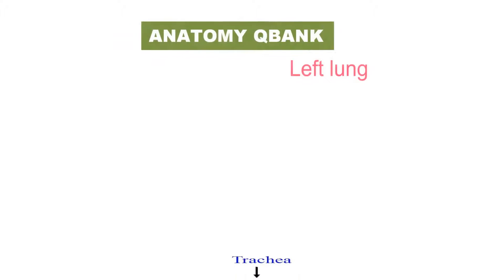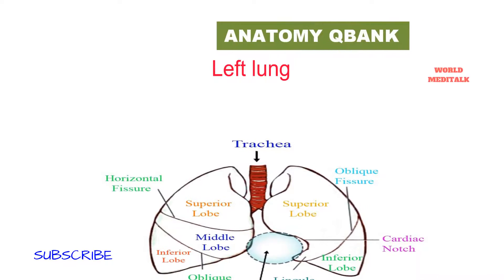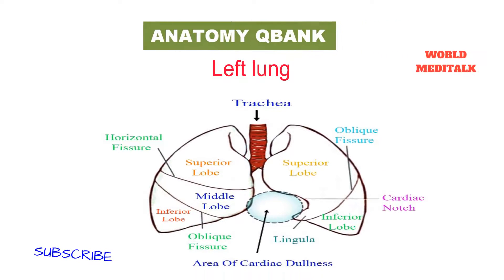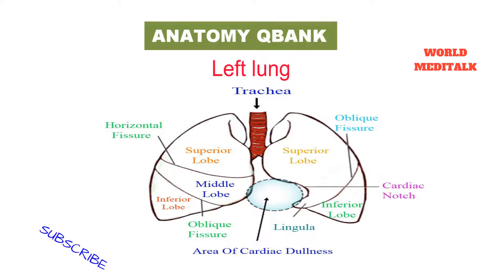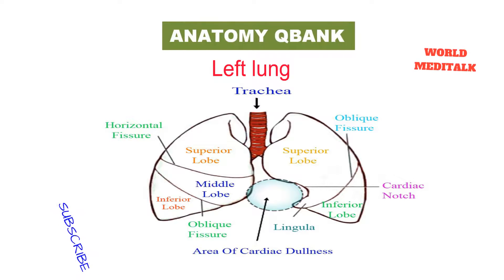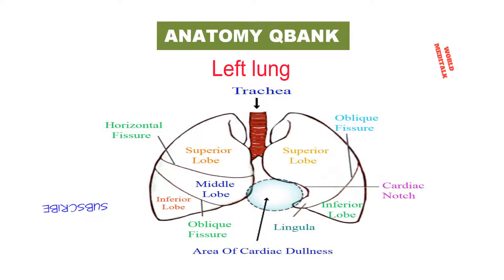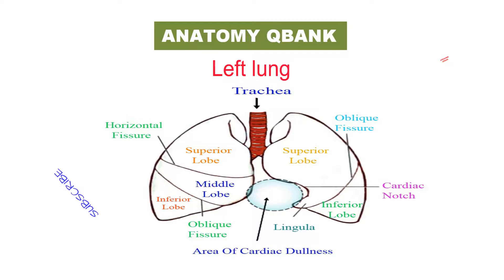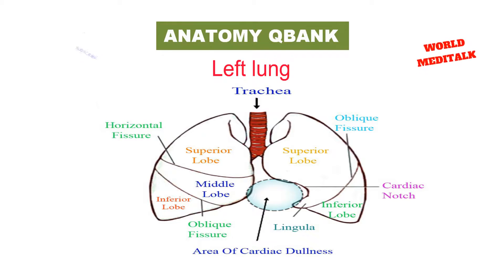In the left lung, above the hilum there is a furrow produced by the aortic arch, and then superiorly the groove accommodating the left subclavian artery. Behind the hilum and the pulmonary ligament is a vertical groove produced by the descending aorta, and in front of this near the base of the lung is the lower part of the esophagus. The root of the left lung passes under the aortic arch and in front of the descending aorta.